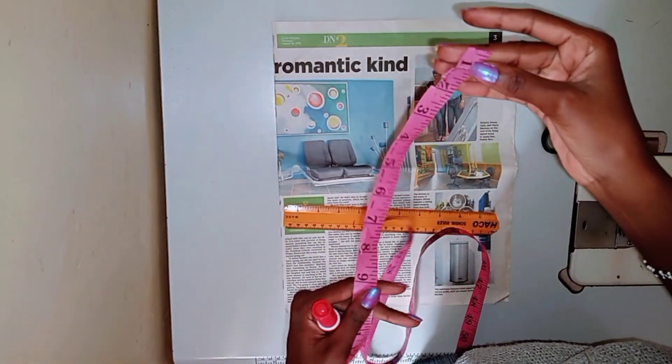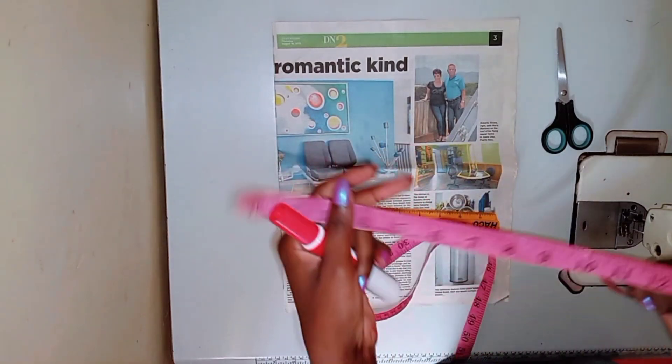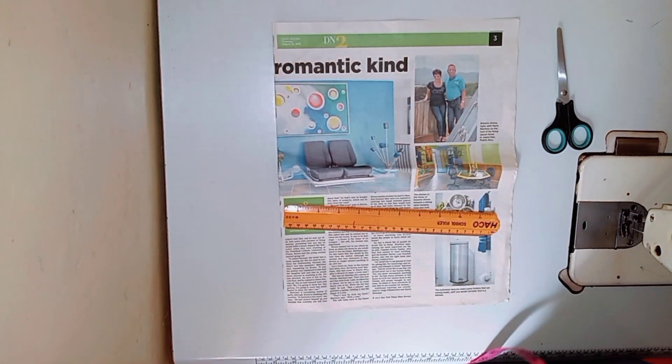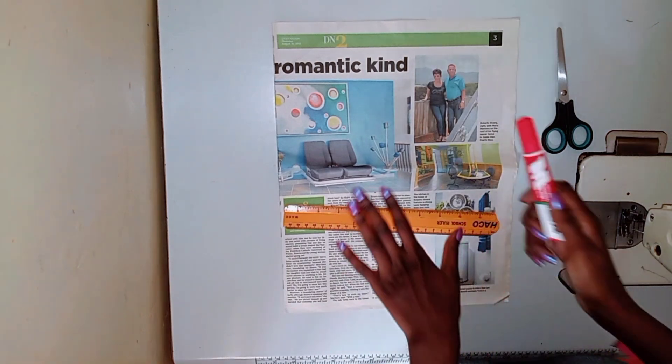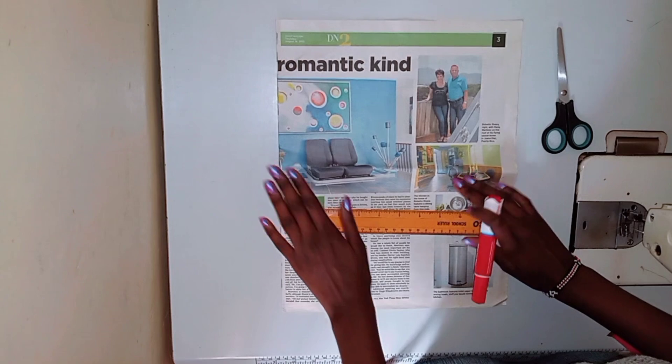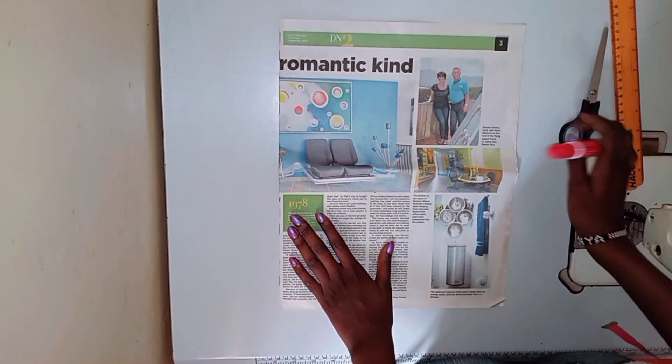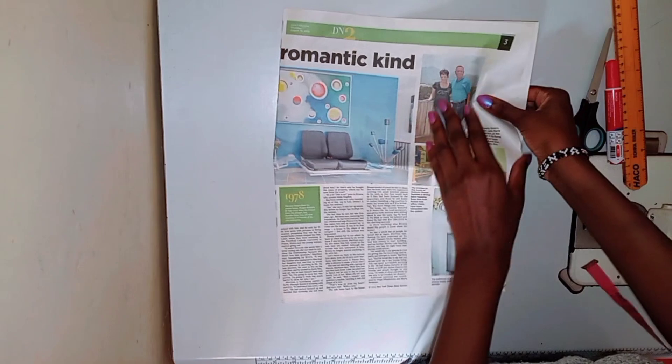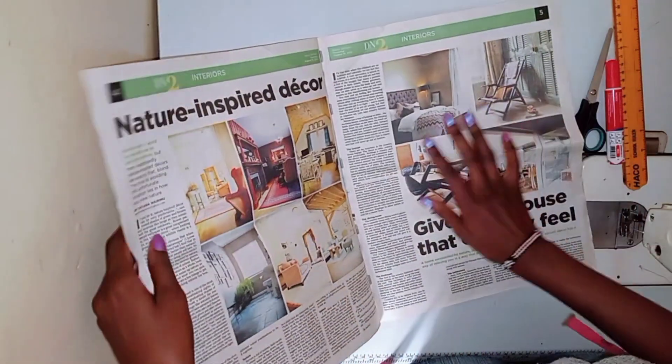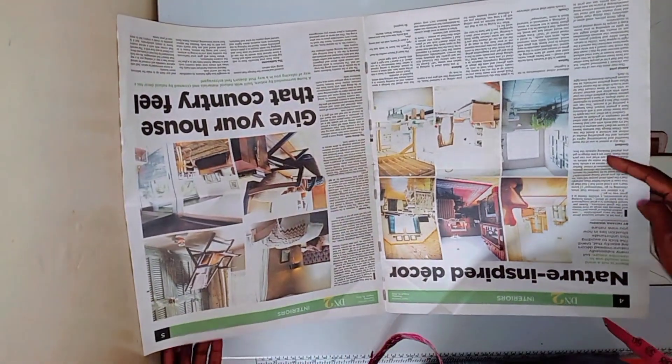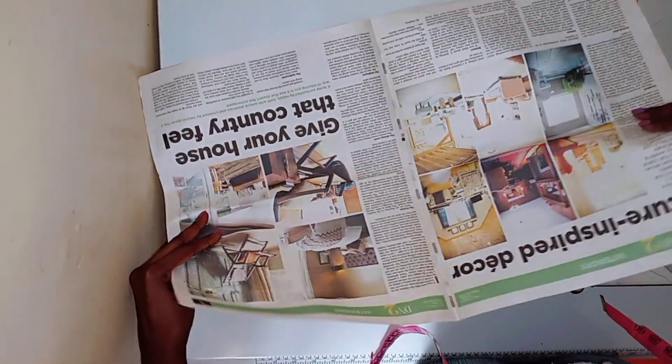Before we get started, let's go over the materials that you will need. Number one, you will need a few sheets of newspaper or pattern paper. You're going to need a ruler or a tape measure, a pencil or a pen. Today I'm going to use a marker so that you guys can see. You're also going to need paper scissors and glue or tape. If you have everything, let's just get started.